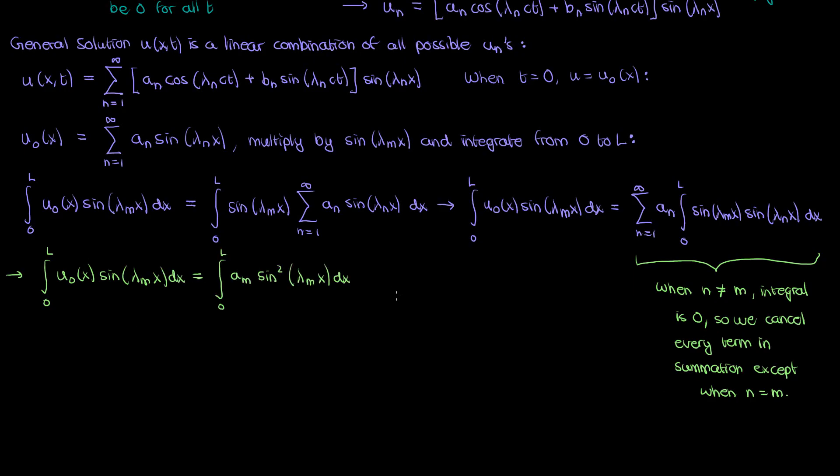If we now integrate the sine squared term on the right hand side we end up with a sub m times l over 2. Now we can isolate our coefficient a sub m to get the following where a sub m is 2 over l times the integral from 0 to L of sine of lambda sub m times x times u0 of x. Now since the letter I use for my index doesn't really matter I can take out the m and use an n instead so that a sub n is given by the following.